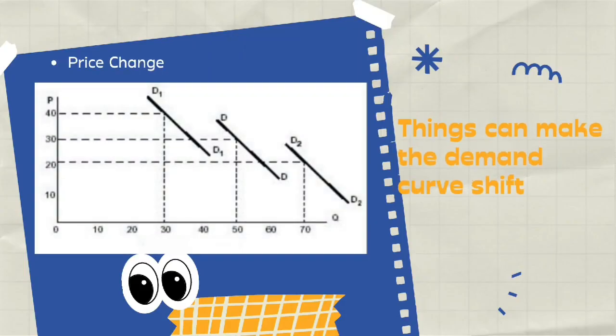Shifts in the demand curve usually occur under several conditions. The first is a shift due to a change in price, resulting in a change in consumers' demand for goods. When prices increase, the quantity demanded decreases, so the demand curve will shift to the left. And if the price goes down, the quantity demanded will increase, so the demand curve will shift to the right.